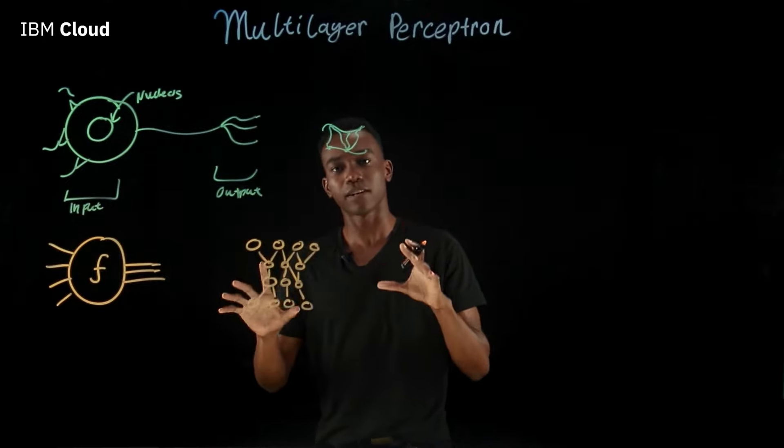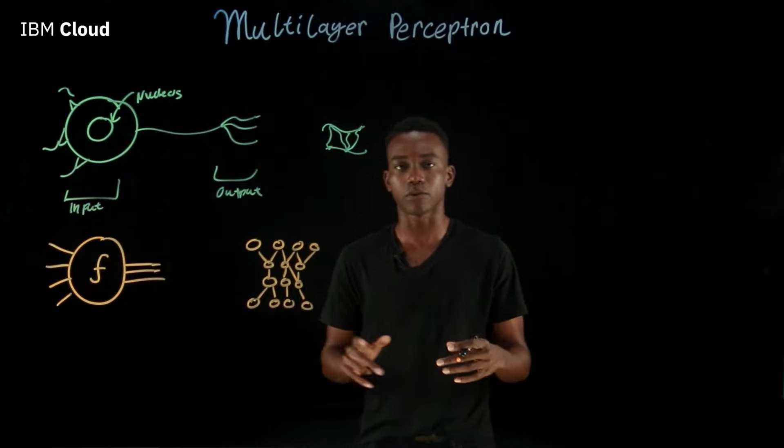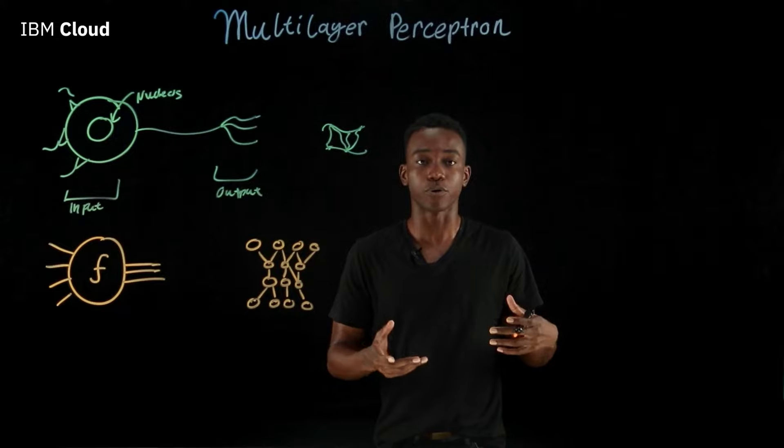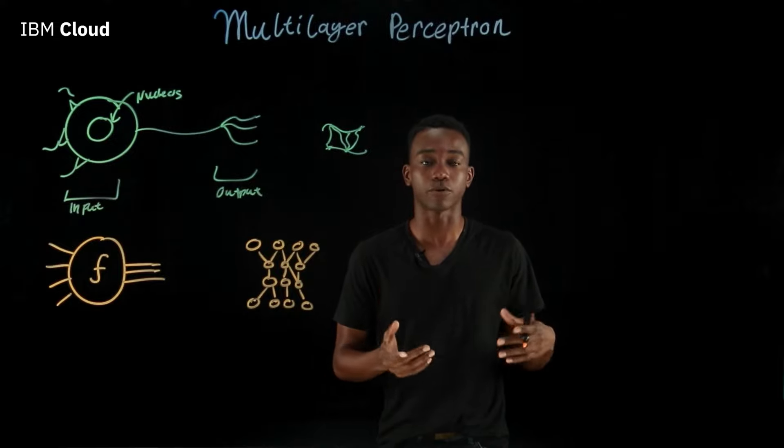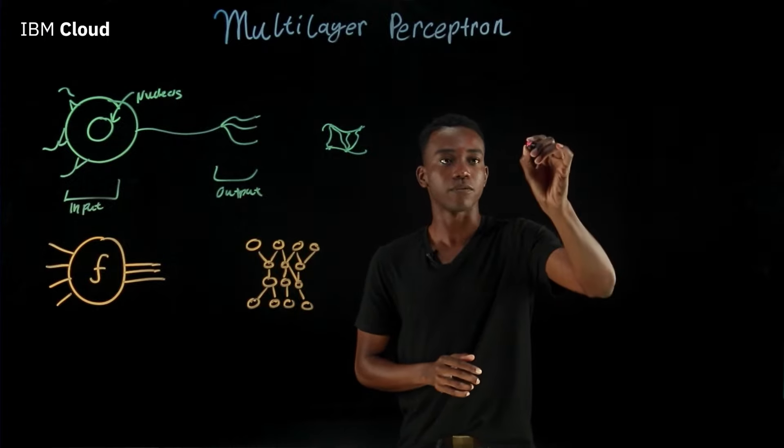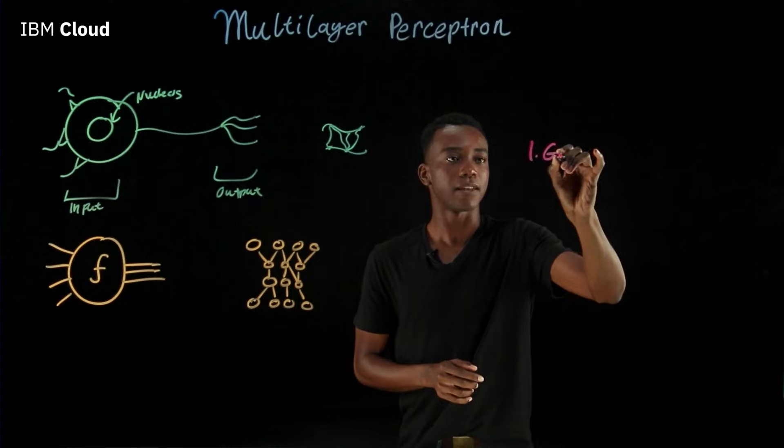So this is just the basic concepts behind the multilayer perceptron. You're probably wondering how we get computers to think and how we get multilayer perceptrons to learn. Well, there's three basic parts of learning. First of all is you make an educated guess.